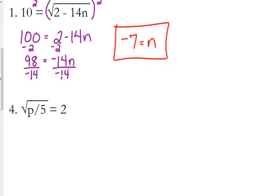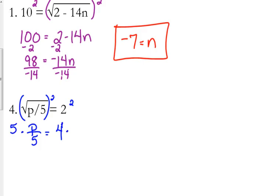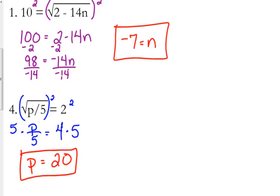Let's look at number 4. Number 4 has p over 5 under the square root. We don't have to do any isolating for this problem. We just need to square both sides. On the left side, we've got p over 5 equal to 4. Then we're dividing by 5, so to get rid of that we multiply both sides by 5, and that gives us p equals 20. That one's simple to check — 20 divided by 5 is 4, and the square root of 4 is 2.